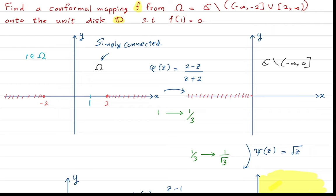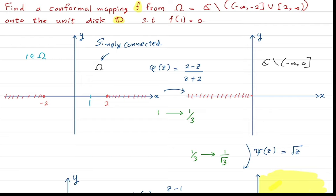Let's check a few values. If you plug zero for z you get one, so the origin maps to one. If you plug one you get two minus one over one plus two, which is one over three, so one maps to one third. If you plug minus one you get three over one. So this first map sends omega to the complex plane minus a slit from minus infinity to the origin.